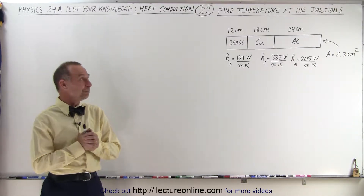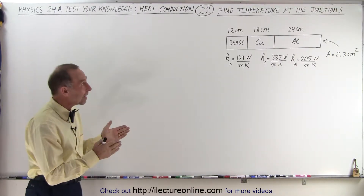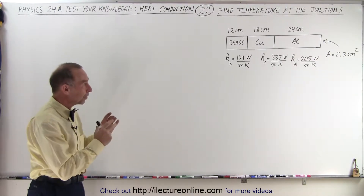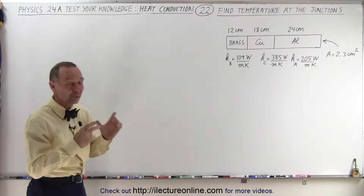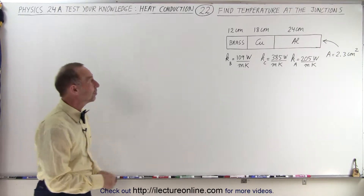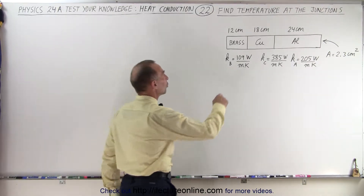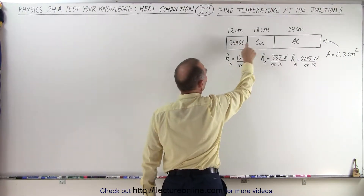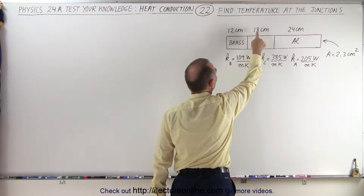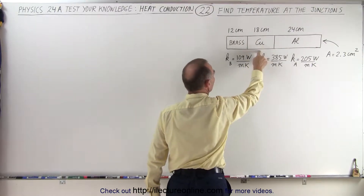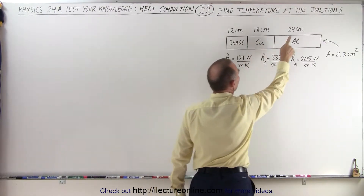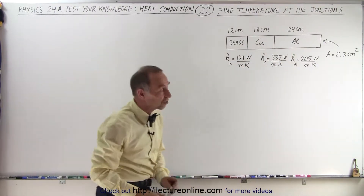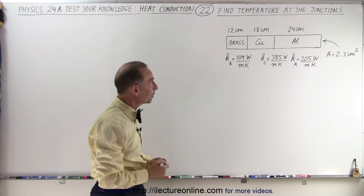Welcome to Electronline. In this case we have a bar that's made up of three different metals: a 12 centimeter long section of brass, an 18 centimeter long section of copper, and a 24 centimeter long section of aluminum.